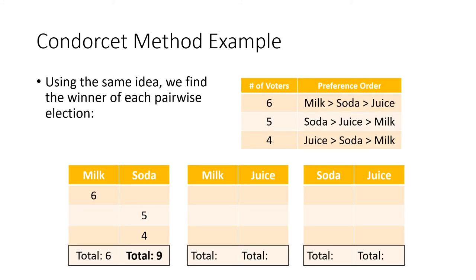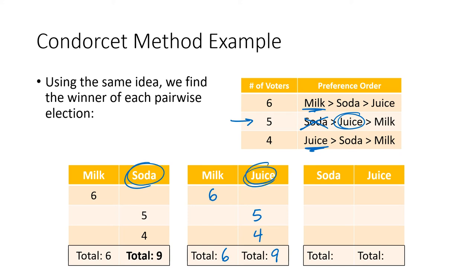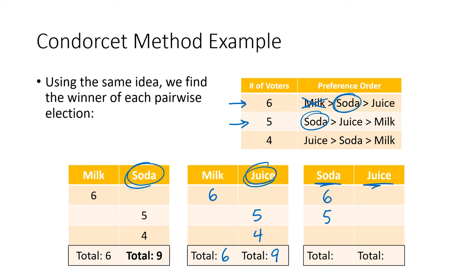Now looking at all the pairwise matchups: we did milk versus soda — soda was the winner. Now milk versus juice: the six voters vote for milk, the four voters vote for juice, and the five middle voters can't vote for soda so they vote for juice. The total is nine to six, and juice wins that one-on-one matchup. Then for soda versus juice: the six voters vote for soda instead of milk, the five voters vote for their top choice soda, and the four voters vote for juice. Soda wins this election eleven to four.